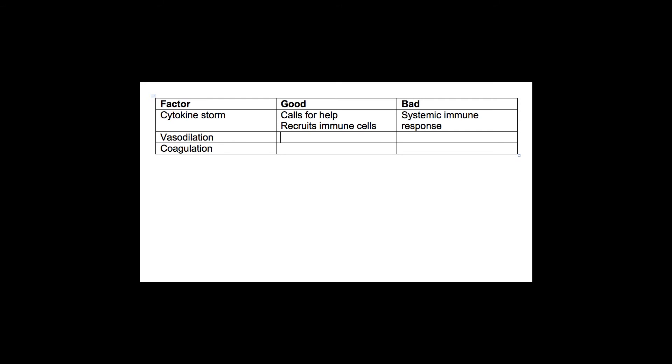Vasodilation is actually good because it helps recruit immune cells, too. It increases blood flow. The problem is that if it's systemic, then you can get aberrant vasodilation and you can get ischemia because you've got not enough blood flow in one place and too much in another place. And vasodilation is dysregulated because it's out of control from the cytokine storm.